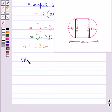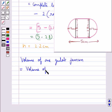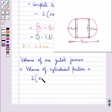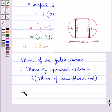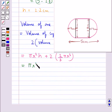Next we need to find the volume of one gulab jamun. This would be equal to the volume of the cylindrical portion plus two times the volume of the hemispherical end. So this is equal to πr²h plus 2 × (2/3)πr³, which becomes πr²h + (4/3)πr³.